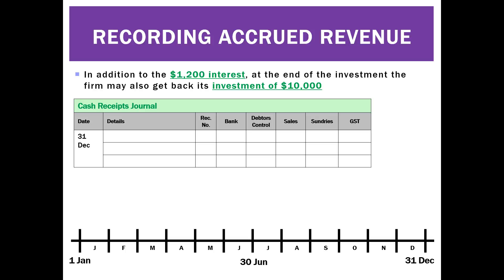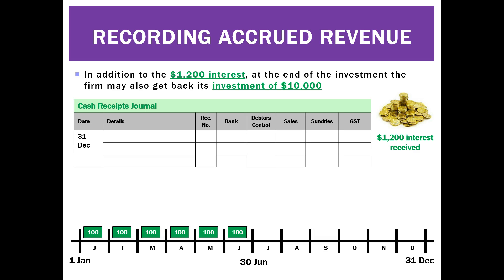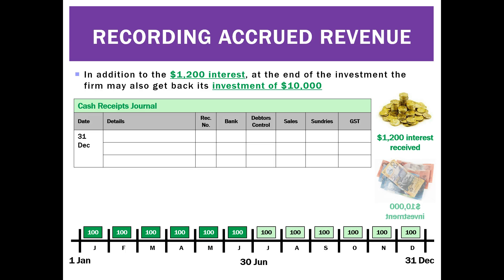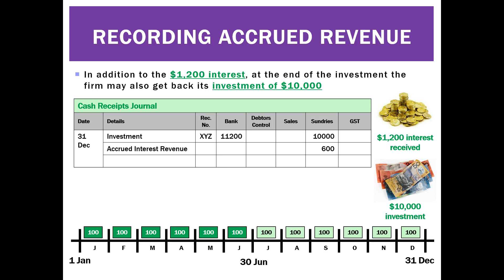What if we change something? Same case study, but at the end of the year we not only get our $600 accrued interest and $600 interest from this period — what if we also got our $10,000 investment back? Sometimes the bank will give back our investment as well. We're going to add another line into our cash receipts journal. The receipt in bank this time will be $11,200. The investment comes back — we no longer have that asset account, so we put $10,000 in sundries. The rest stays the same: accrued interest revenue of $600 on one line, interest revenue of $600 on another. Importantly, we just have one number of $11,200 in the bank column, split over three lines: the investment, the accrued interest revenue, and the interest revenue.